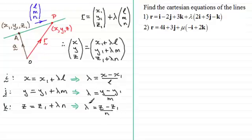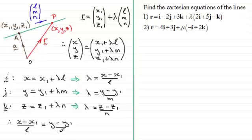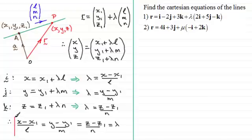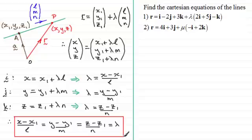Now because all of these equations equal lambda, they must equal one another. So we get: x minus x1 divided by l equals y minus y1 divided by m, equals z minus z1 divided by n. And they all equal lambda.